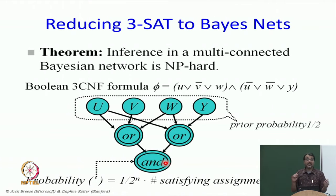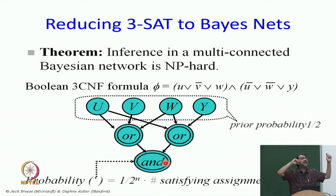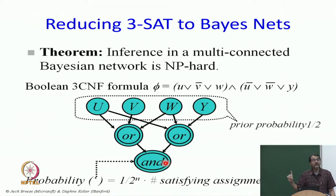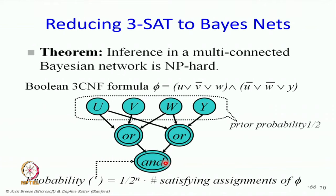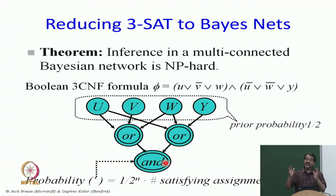Usually the probability will be a number between 0 and 1. This is very interesting because all the original variables are independent, so all possible configurations are captured. If there is only one solution, the probability of AND will be 1 over 2 to the power n. If there are exactly 2 solutions, it will be 2 over 2 to the power n, and so on. So Bayes nets not only tell you if the SAT formula is satisfiable, they can count the number of solutions.